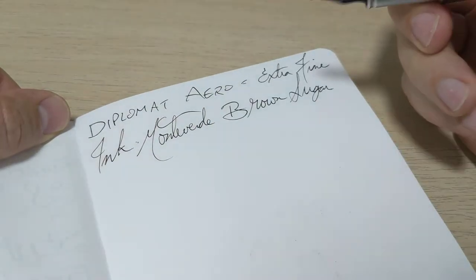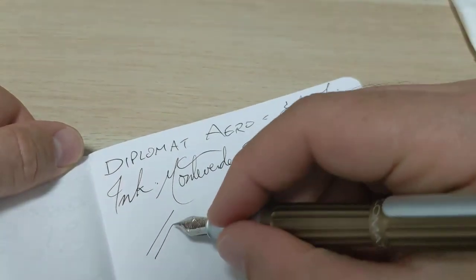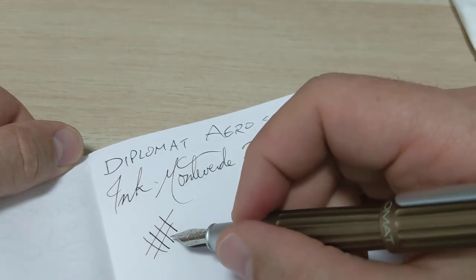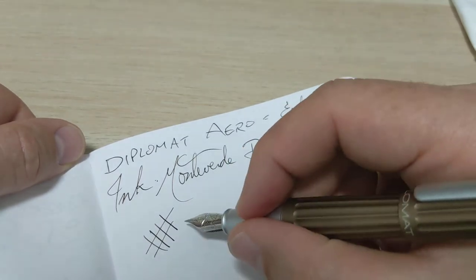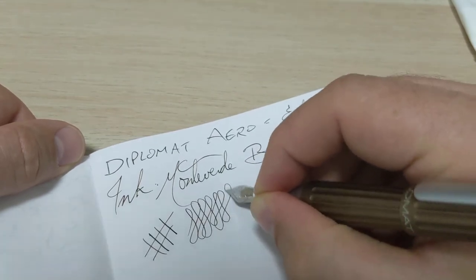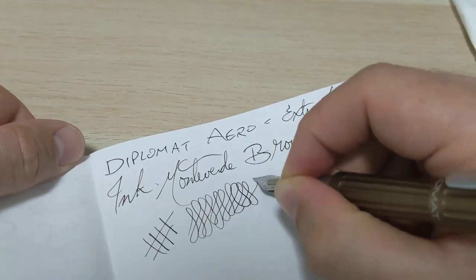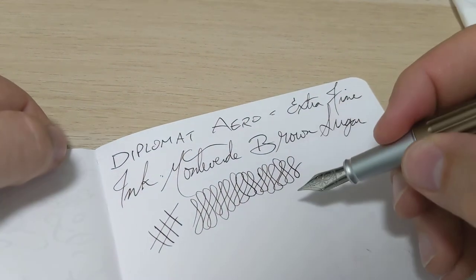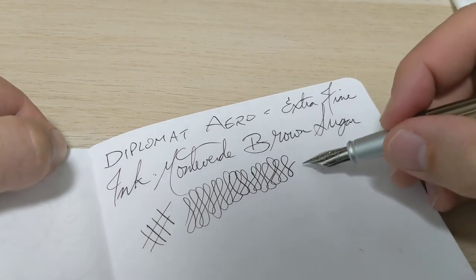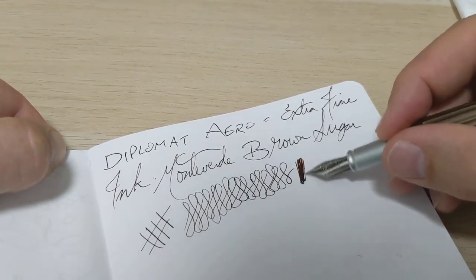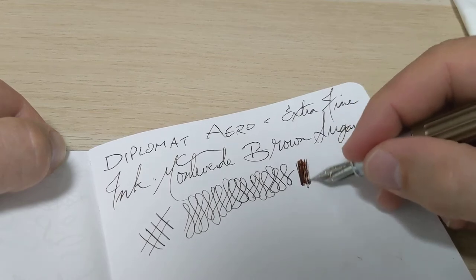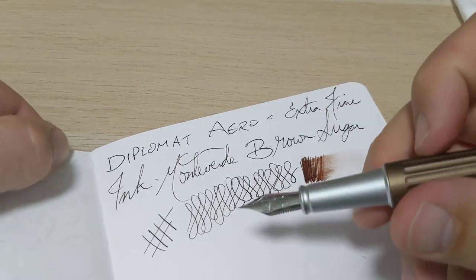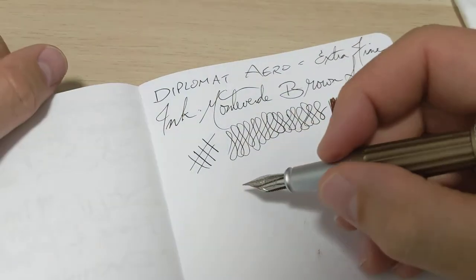This is an extra fine - there's no real action on this nib. You don't buy an extra fine to have line variation or something fancy. You get it because you want to write in small spaces or you don't want a super gusher of a pen. It writes super nice. For an extra fine, it's reasonably smooth, lays down ink, doesn't skip. It does a really good job at being a pen, first and foremost. I enjoy this pen.